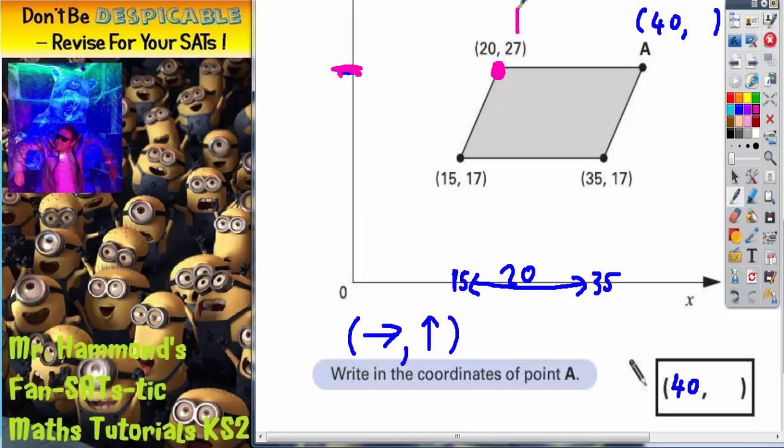Well, this point is 27 up, and point A is up the same amount because they are level. They are on this line here. So if this point here is 27 up, point A must also be 27 up, which gives you the second part of the coordinate.